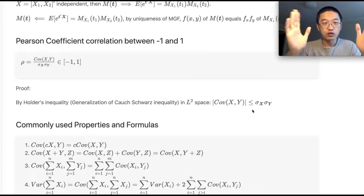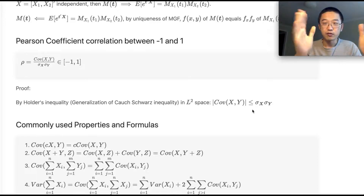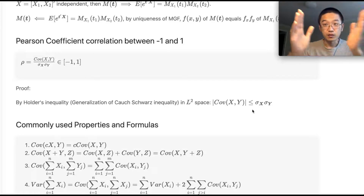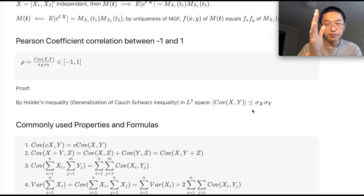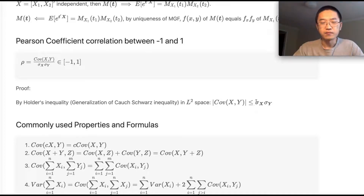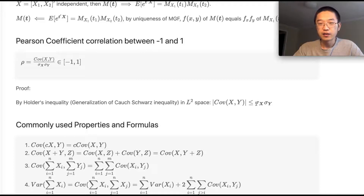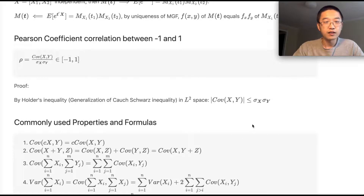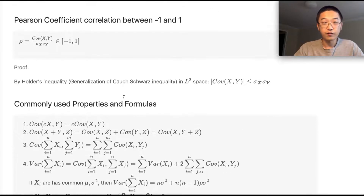By the Cauchy-Schwarz or Hölder's inequality, you take the absolute value inside the integral and move it in. That becomes the square root of the integral in L² space, which is basically the standard deviation of X times the standard deviation of Y. And that gives you the Pearson correlation coefficient bound.